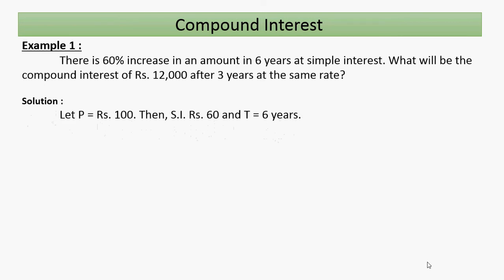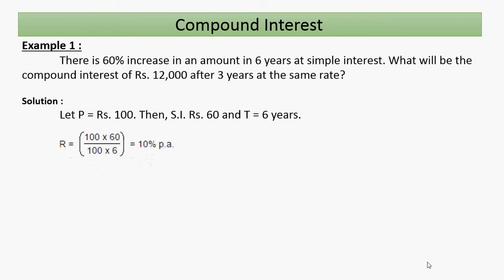Let's see the solution. Assume P is rupees 100. Simple interest increased by 60 percentage, so SI is 60 over six years. Using the formula: SI = P × R × T / 100, that gives us 100 × R × 6 / 100 = 60. So rate equals ten percent per year.